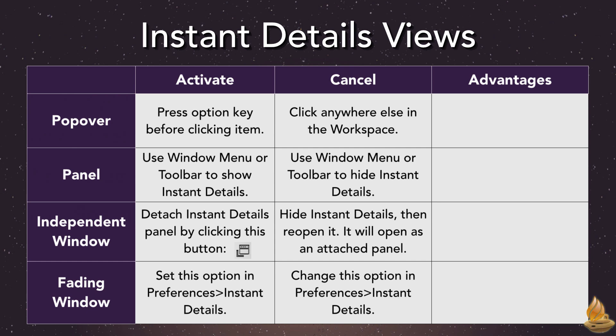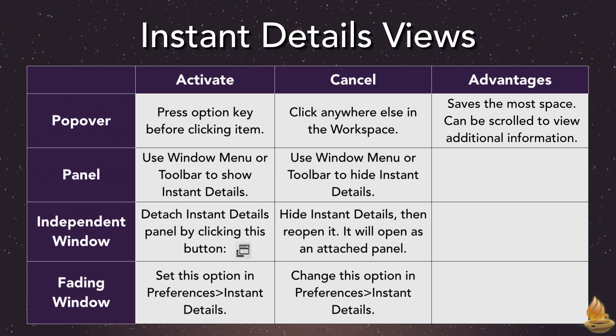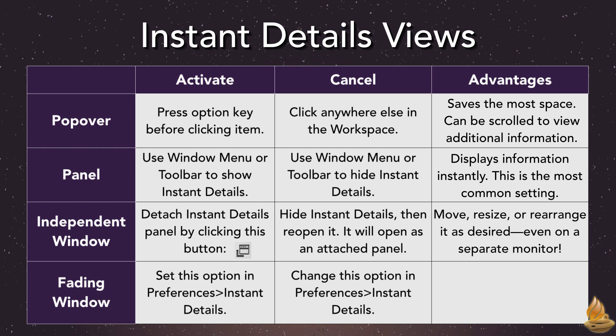This is a handy chart of those four views we just looked at, and how to activate and cancel them. Each view has some advantages. The pop-up saves the most space and can be scrolled to view additional information — it may be the best choice for those of us with very small monitors. The panel view displays information instantly and is the most common setting, especially attached to the workspace at the very bottom, although it can be moved to the side as well.